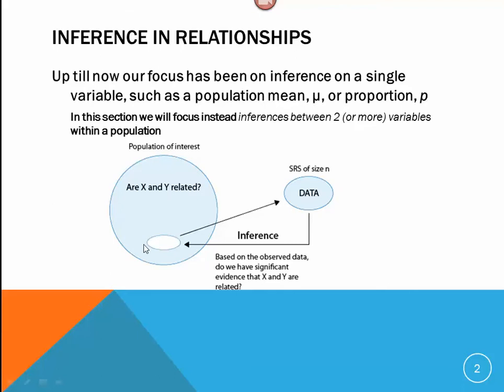So we take two samples from our population and we collect our data, we analyze it, and then based on the observed data, the question, do we have significant evidence that X and Y are related, is answered.